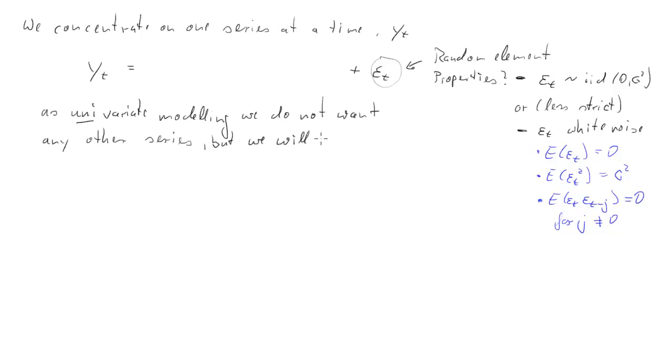However, what we will allow to appear in that process are lags for both the terms we already have, for yt itself. So we will allow lags for yt, and for the random term, or the random element, epsilon t.